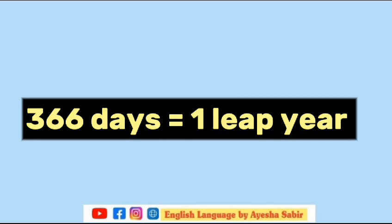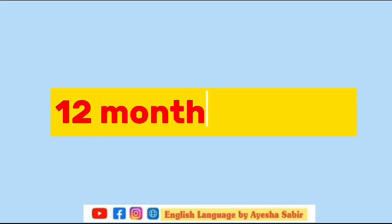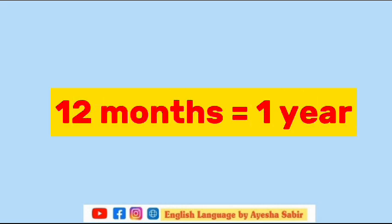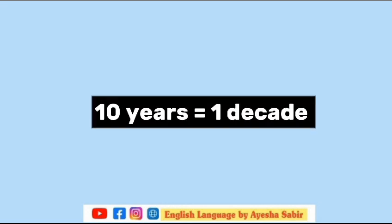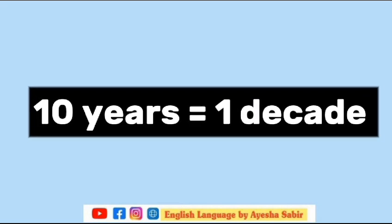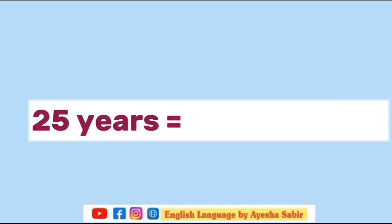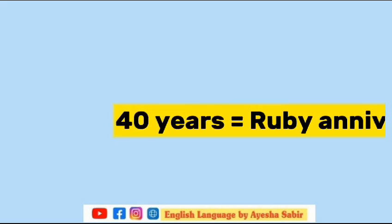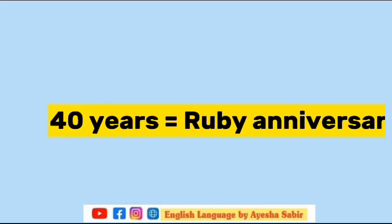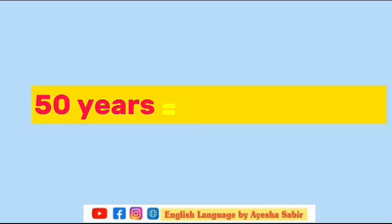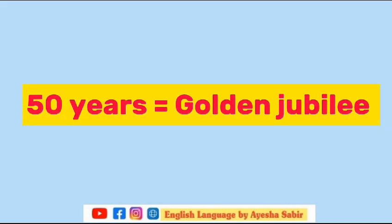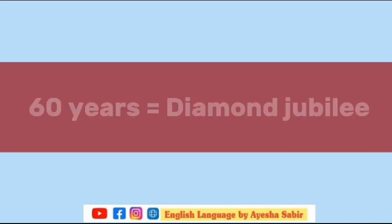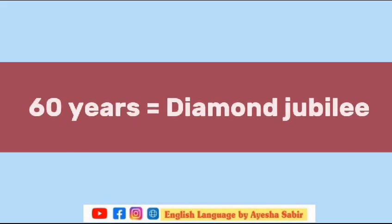12 months equal to one year. 10 years equal to one decade. 25 years equal to silver jubilee. 40 years equal to ruby anniversary. 50 years equal to golden jubilee. 60 years equal to diamond jubilee. 75 years equal to platinum jubilee.